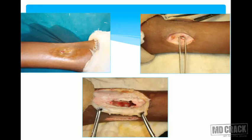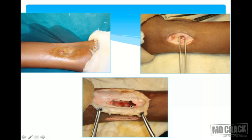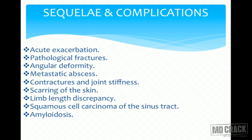This was a young child with chronic osteomyelitis of the lower end of the tibia. The image on the left shows the sinus tract, which was completely excised. Total sequestrectomy was performed, along with radical and adequate debridement to prevent persistence and recurrence of the infection.